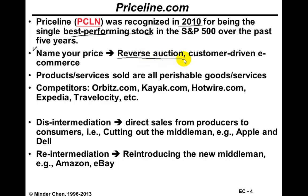The reverse auction means the e-commerce is really driven by the customer, by the consumer. The consumer takes initiative, names their own price, and then the supplier — the airline — can decide whether they want to meet the requested price and sell the ticket at that price. Priceline has tried to sell other goods and services such as rental cars, cruise packages, gasoline, and grocery. The grocery and gasoline offerings are no longer offered by Priceline.com.